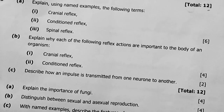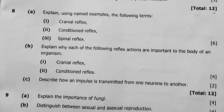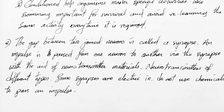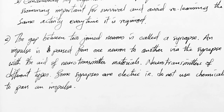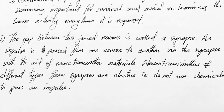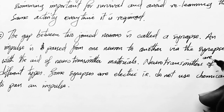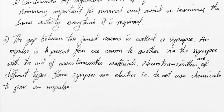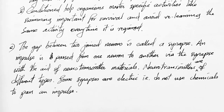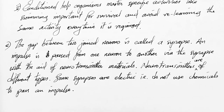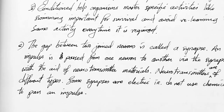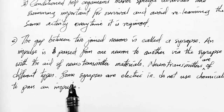Question 8c: describe how an impulse is transmitted from one neuron to another — 2 marks. The gap between two joined neurons is called the synapse. An impulse is passed from one neuron to another via the synapse with the aid of neurotransmitter chemicals. Neurotransmitters are of different types. Some synapses are electrical and therefore do not use chemicals to pass an impulse. So impulses are passed through chemical neurotransmitters or through electrical pathways — we have a chemical synapse and an electrical synapse.